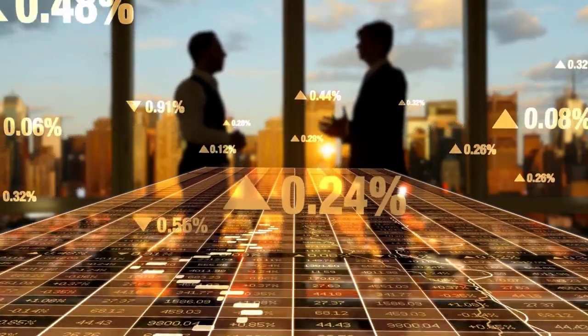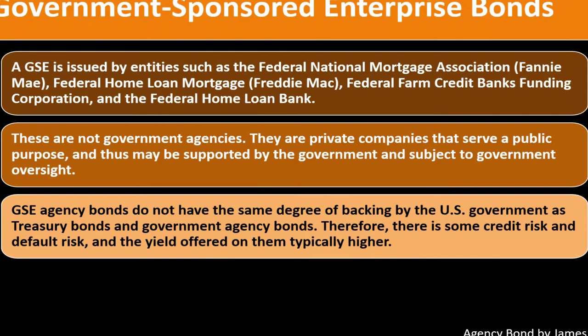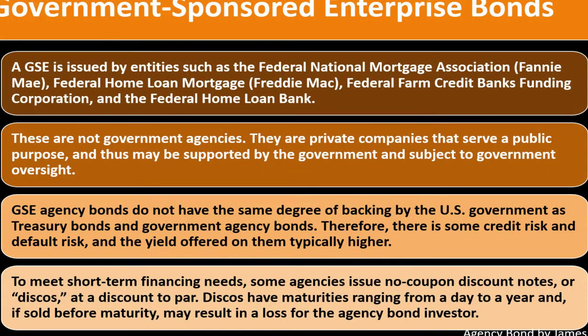GSE agency bonds do not have the same degree of US government backing as Treasury bonds or federal agency bonds, so there is some credit and default risk. Therefore, the yield offered on GSE bonds is typically higher. To meet short-term financial needs, some agencies issue no-coupon discount notes — called 'discos' — at a discount to par value, with maturities ranging from one day to two years. If sold before maturity, these may result in a loss for the investor.